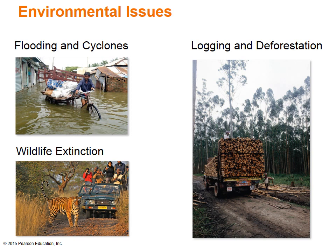Wildlife preservation has become an important endeavor in this region, with many species near extinction. Animals such as the Asiatic lion, tigers, and elephants are protected in wildlife reserves. However, population pressures continue to encroach on areas once inhabited by these large animals. Tourists photograph a tiger in Ranthambore National Park in the Indian state of Rajasthan, which is one of the best places in South Asia to see wild tigers.